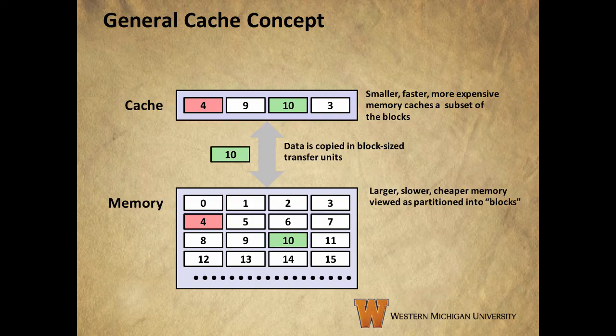Now we'll review some basic information about the general concept of caches from the last video. Remember that a well-written program with good locality has a high chance of referencing the same objects in memory multiple times. That means we can put the objects most likely to be referenced often into the faster memory at a higher level of the memory hierarchy. In this illustration we see the main memory partitioned into blocks, and we can copy the data in block-sized units to the faster cache memory. Because of locality, if a program references data in block 10, we know it is likely to reference block 10 again in the near future, so we'll move block 10 to the cache so it can be accessed more quickly. When a block a program needs is already in the cache and we don't have to move any data from memory, it's referred to as a hit. When the block is not in the cache and needs to be retrieved from memory, it's called a miss.